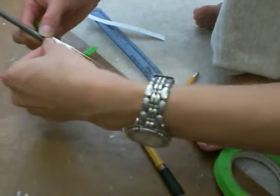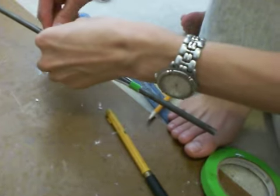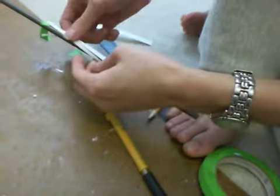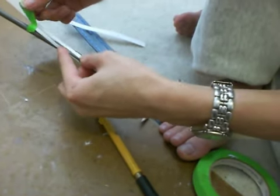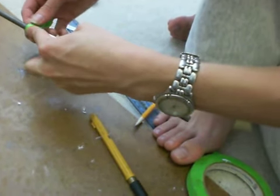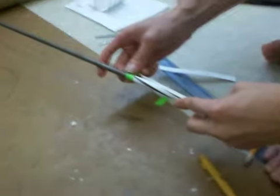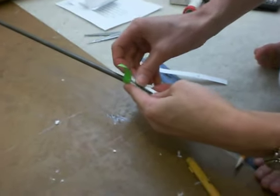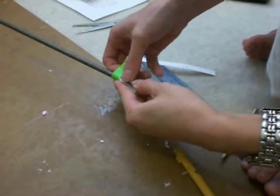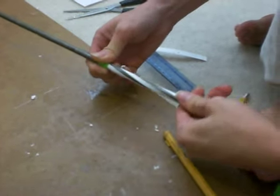I advise you to do this while the strip is still wet, because once it dries it's kind of a pain. This one's dried up a little bit so it's a little tough to wrap it around. Try to achieve equal spacing between these things.